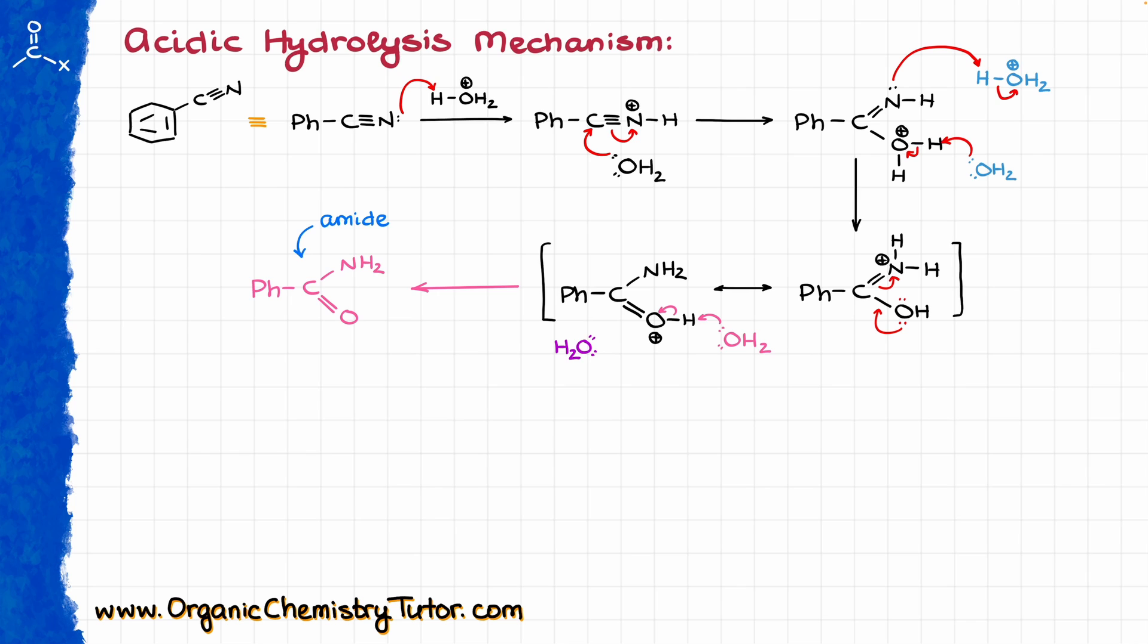Instead of doing the acid-base chemistry, what we're actually going to see happening here is that water going to attack, giving us a tetrahedral intermediate looking like this. Again, like in one of our previous steps, we'll have to get rid of the proton from our oxygen and put that extra proton on the nitrogen to convert that into a leaving group.